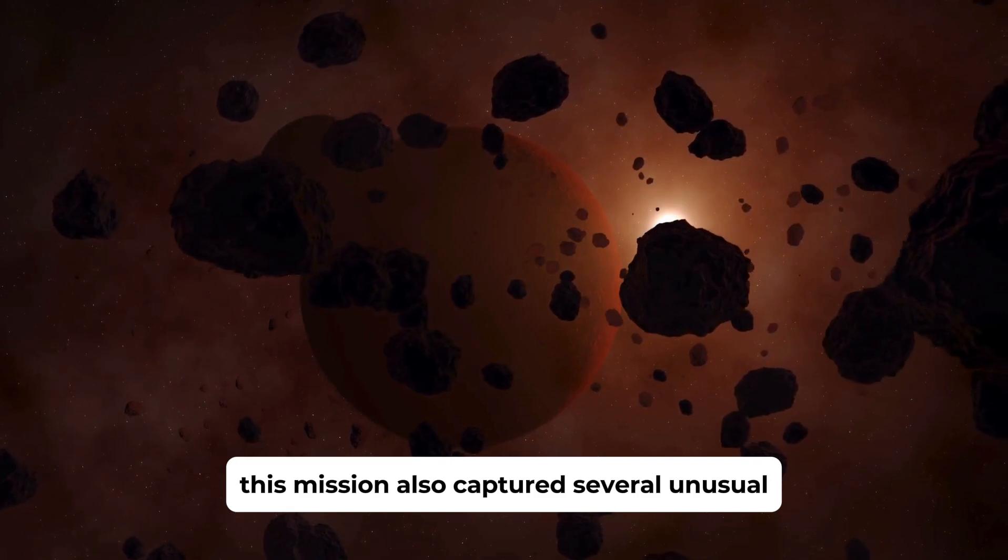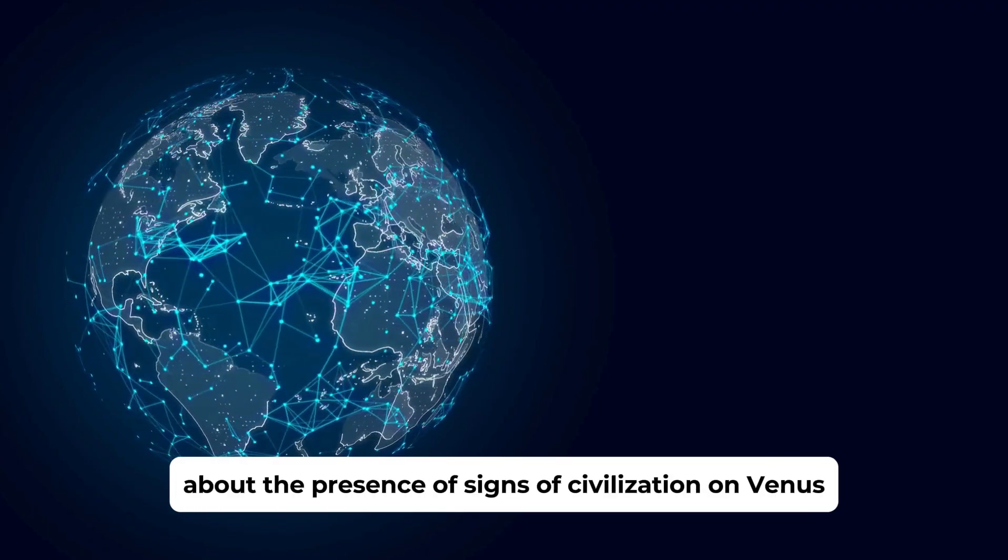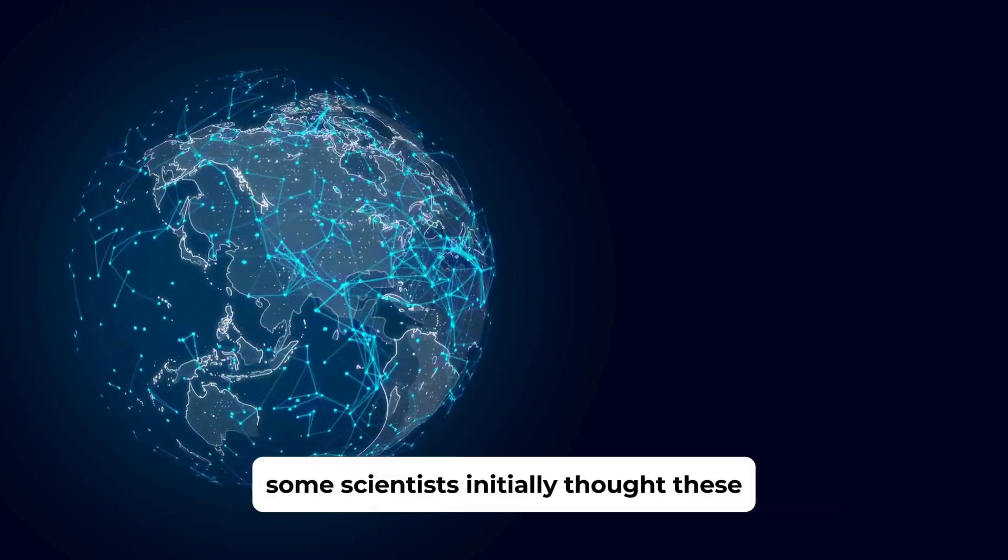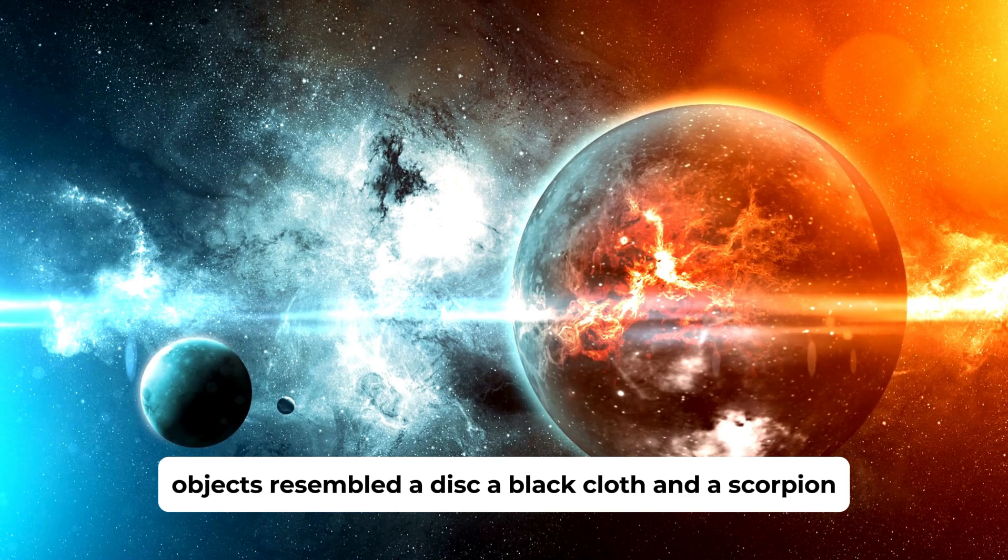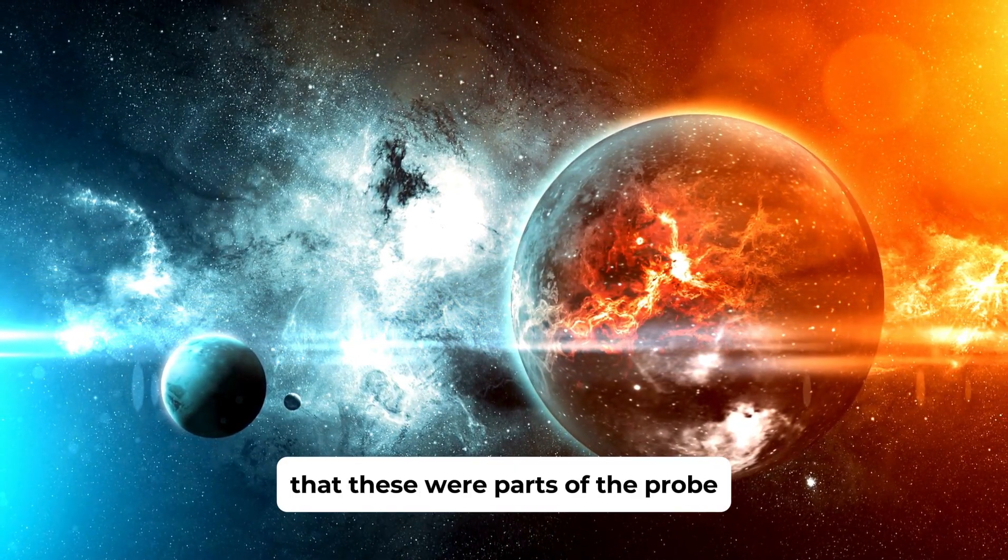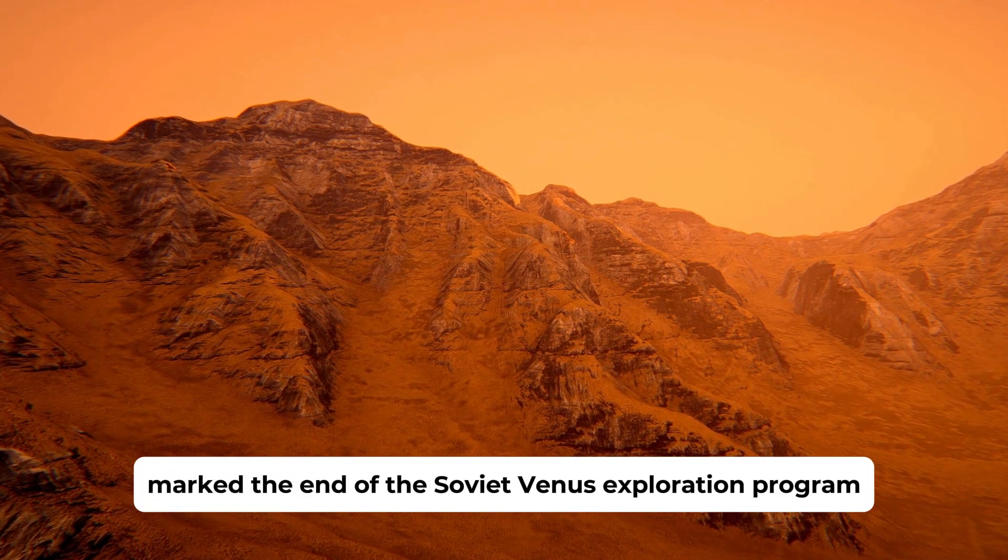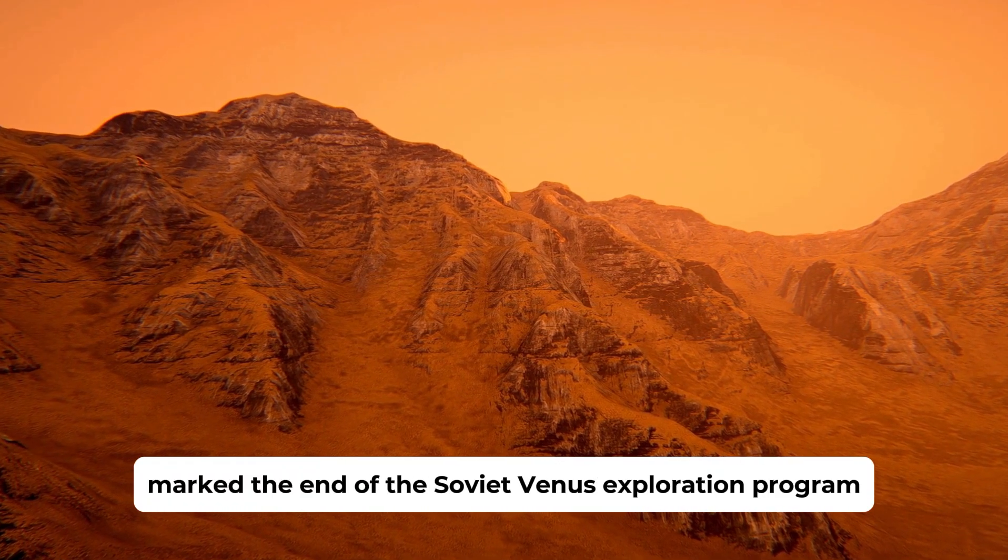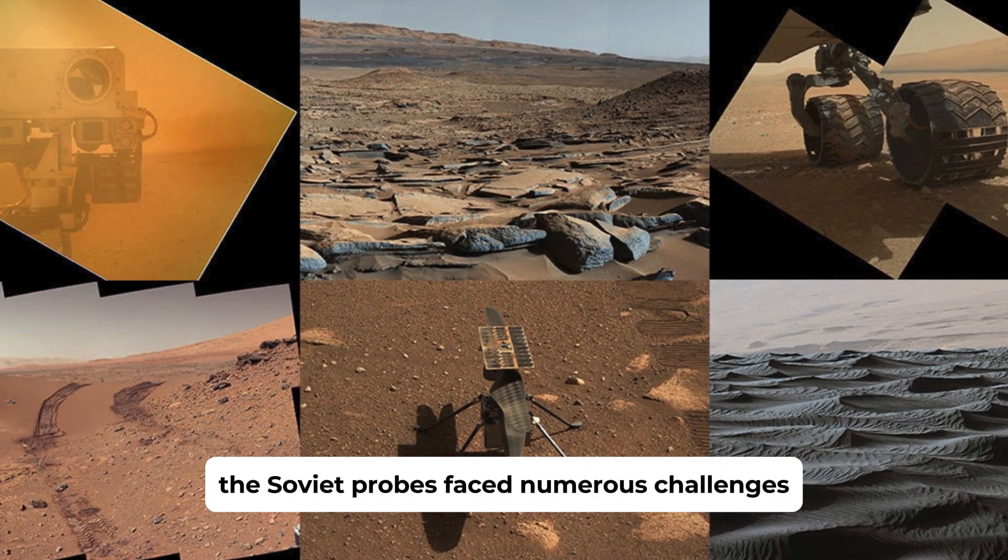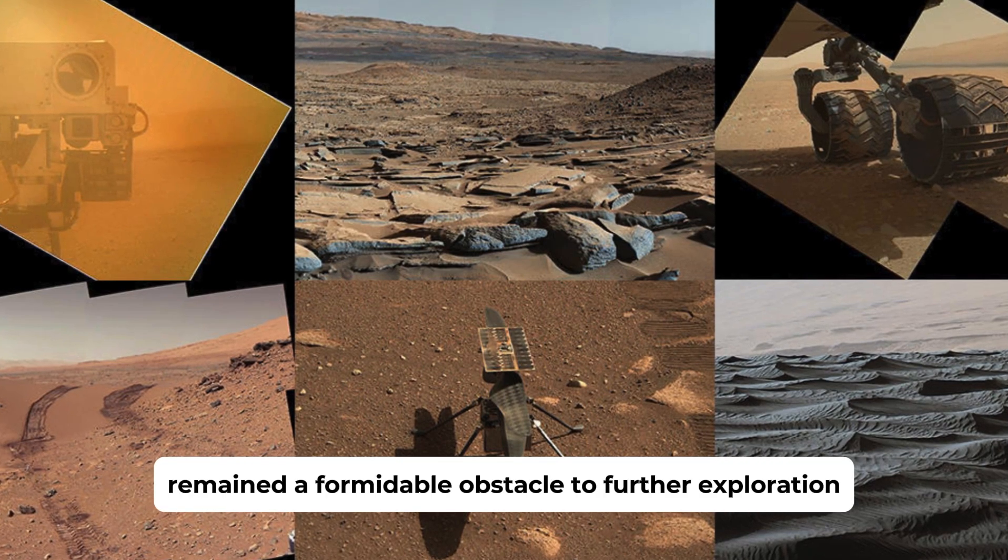This mission also captured several unusual objects in the images, which led to speculation about the presence of signs of civilization on Venus. Some scientists initially thought these objects resembled a disc, a black cloth, and a scorpion. However, it was later determined that these were parts of the probe that had detached during the landing. The Venera 14 mission marked the end of the Soviet Venus exploration program. Despite its successes, the Soviet probes faced numerous challenges, and the harsh conditions on Venus remained a formidable obstacle to further exploration.